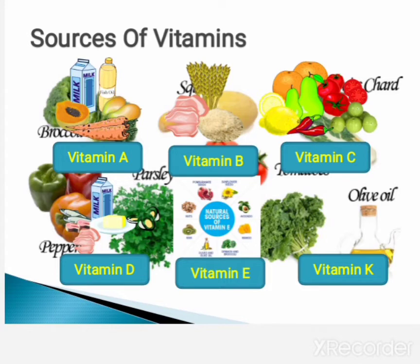If we explore vitamin C, tomato, orange, guava, lemon, and amla are some important sources of vitamin C. On the other hand, milk, butter, liver, eggs, and fish are the important sources of vitamin D.